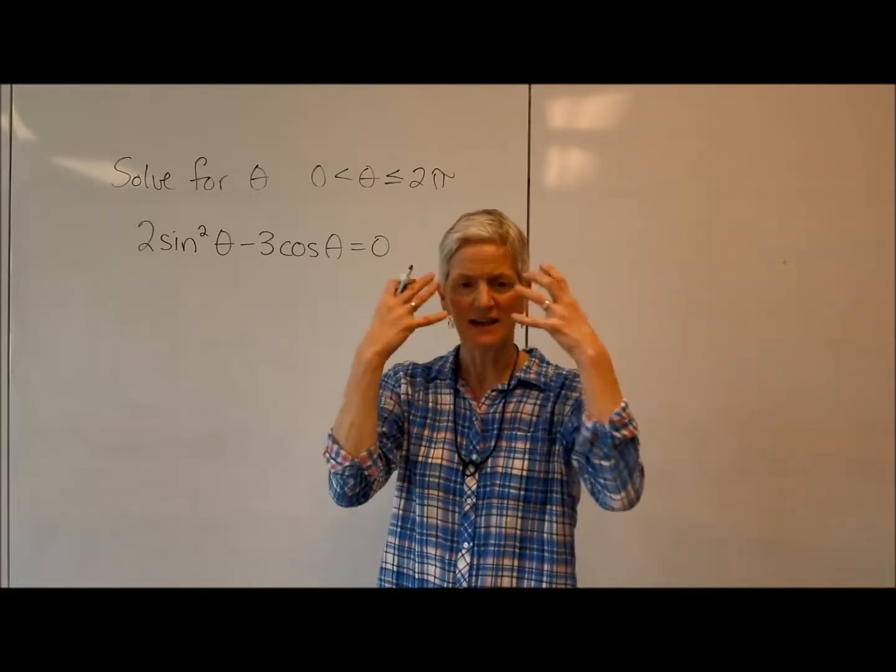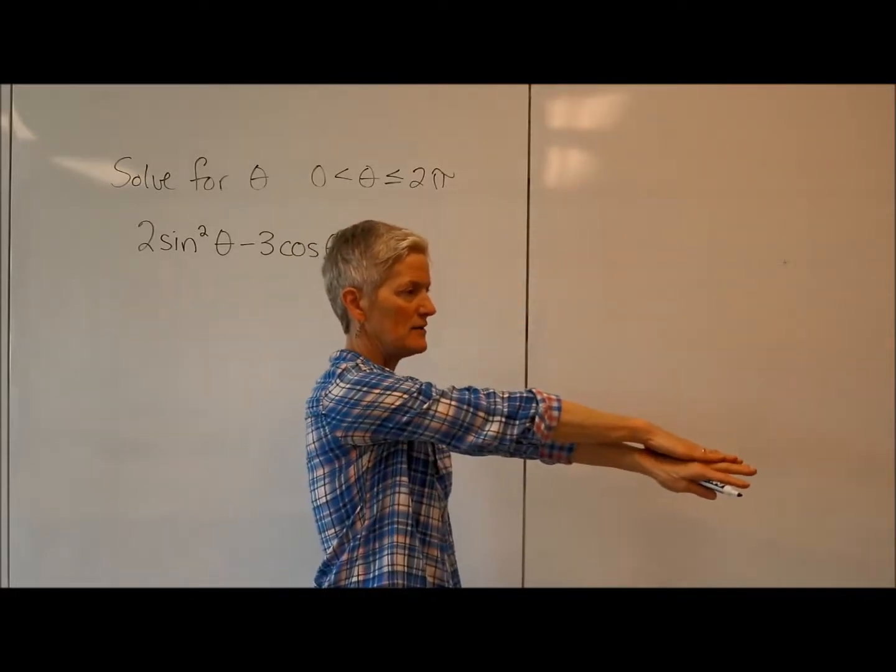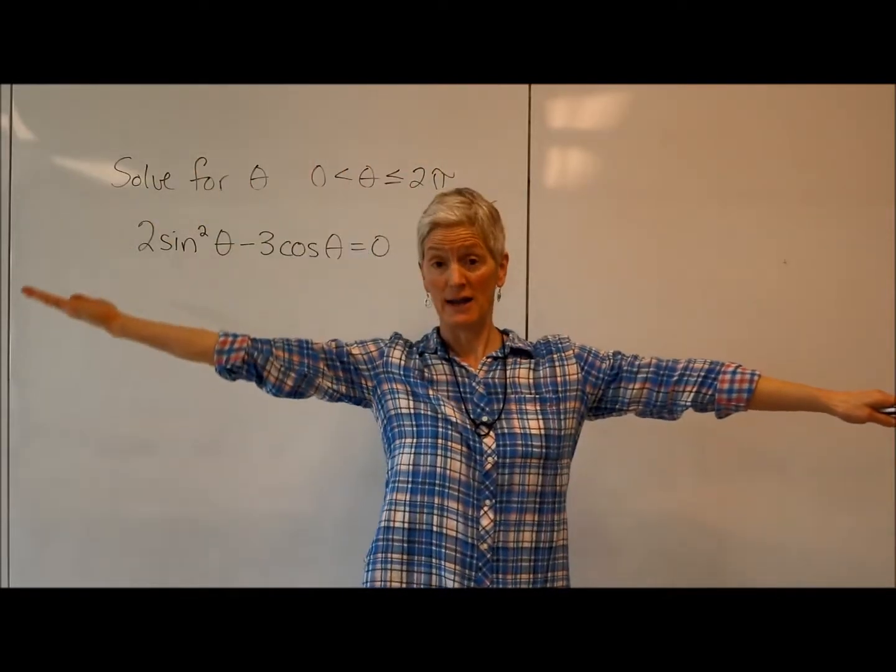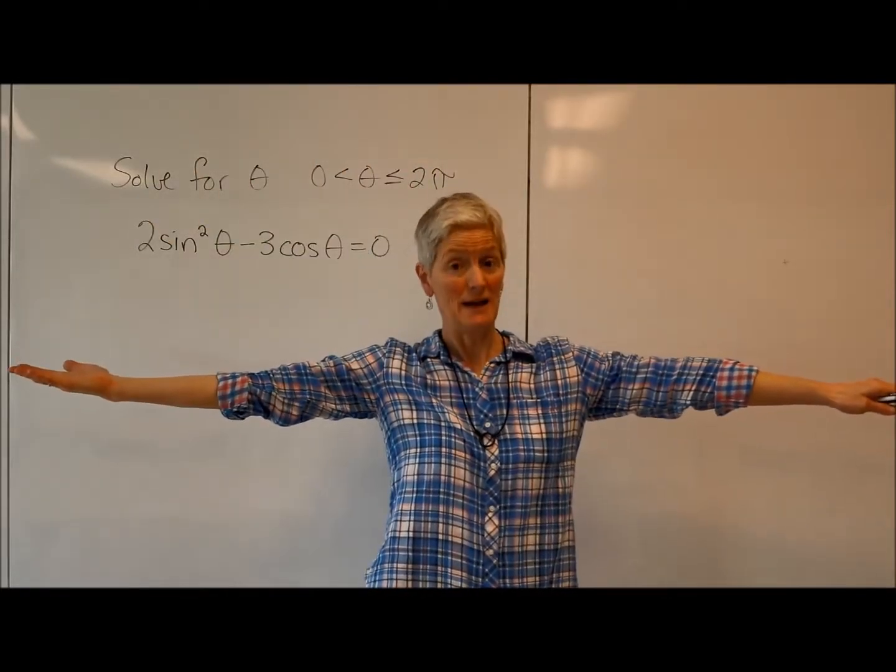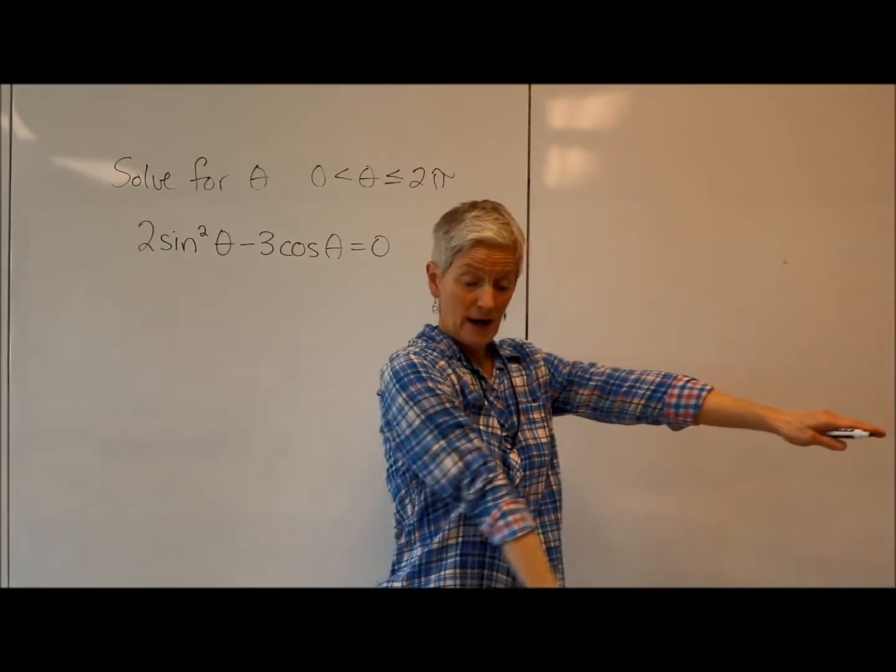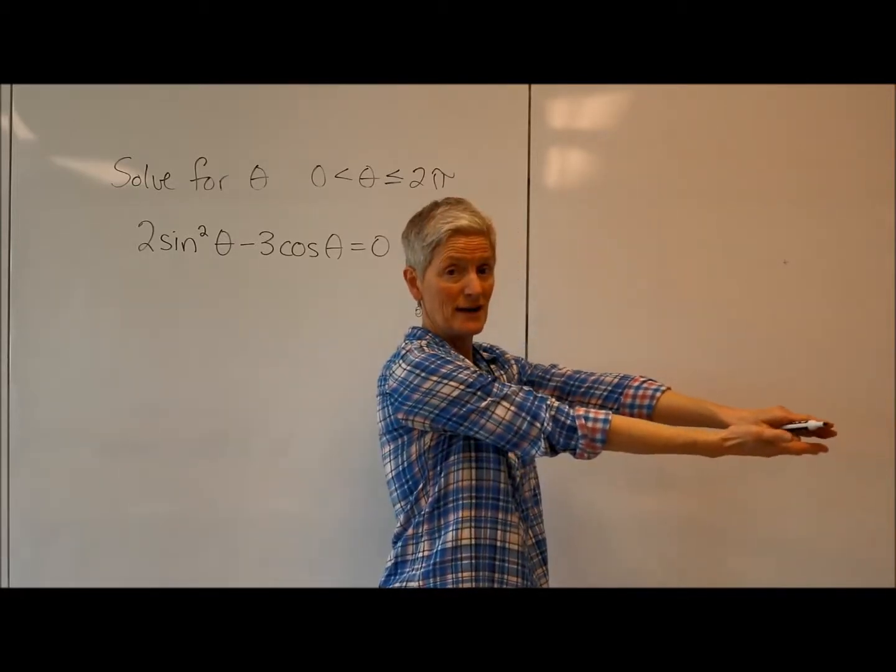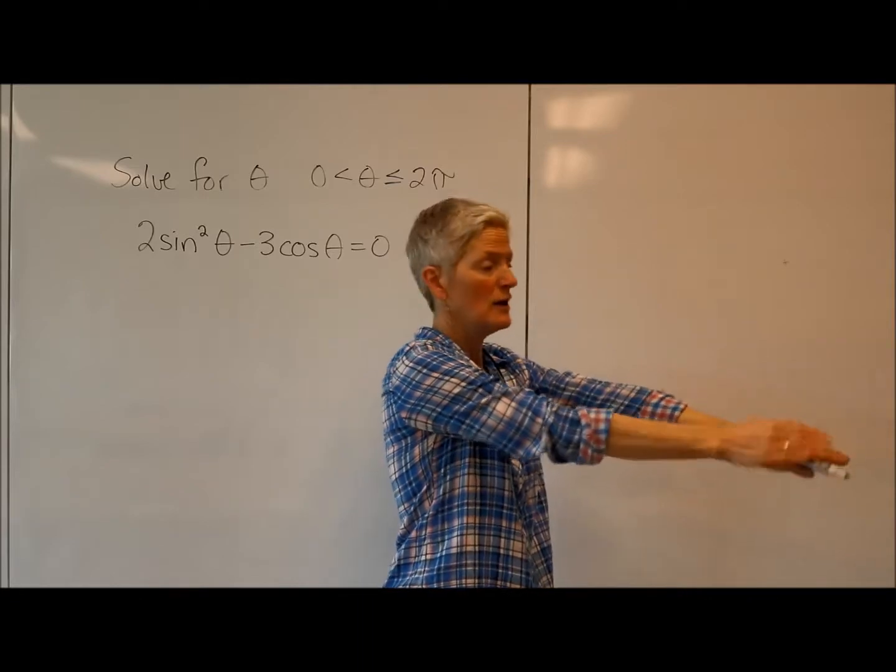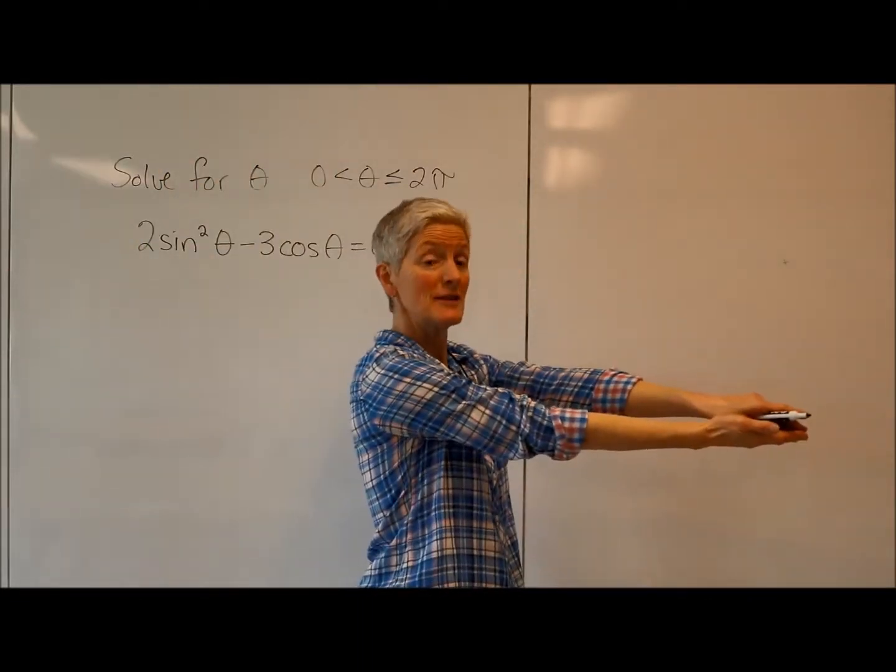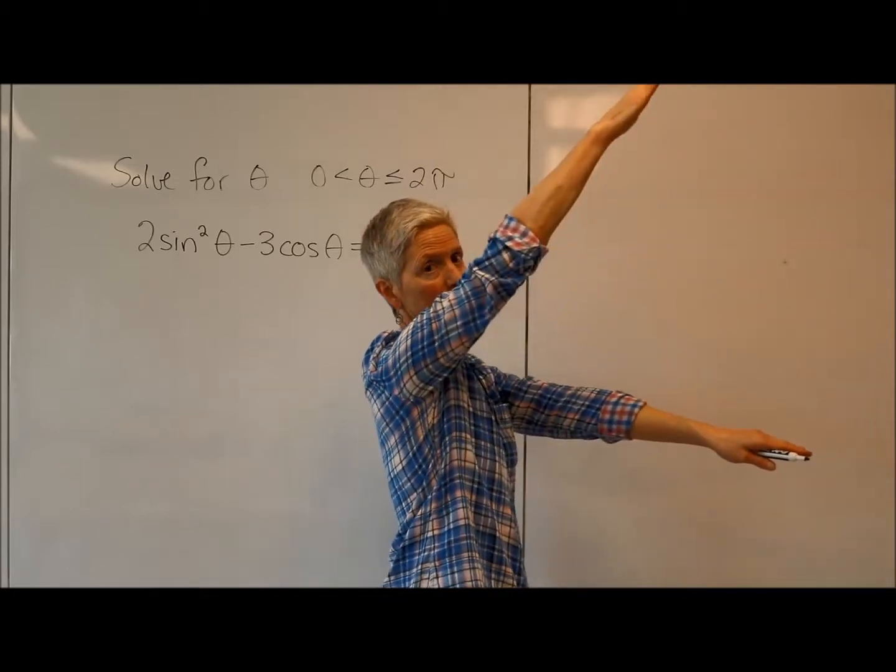So radians, let's get in our radian head. 0 radians, π over 2 radians, π radians. But that's about 3, right? That's about 3 radians. 3π over 2 radians, 2π radians, which is a little more than 6. So a whole rotation, 2π radians, a little more than 6 radians. 1 radian is about there.